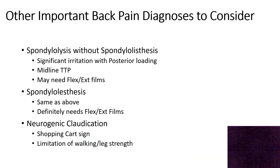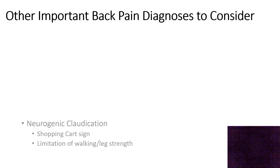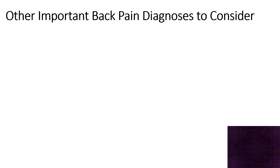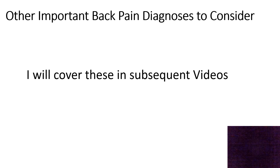There are other important back pain diagnoses that don't neatly fit into what we've discussed — things like spondylolysis with or without spondylolisthesis, and neurogenic claudication. We'll discuss those in further videos. What we've covered between anterior and posterior column, axial and radicular pains probably covers 85% of back pain that is difficult to treat.